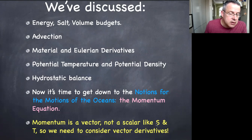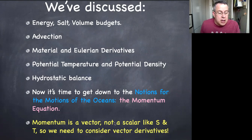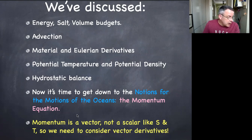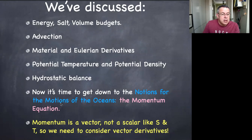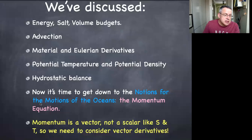Momentum is a vector, not a scalar like salinity and temperature, so we need to consider vector derivatives. This brings us to a level of mathematical complexity that's a bit higher. The equations are written out in both the Wunsch textbook and the Vallis textbook. All of the figures and equations I'm talking about are drawn from Vallis, which is a simpler presentation than Wunsch, though the versions in Wunsch are satisfactory — it just skips over many intermediate steps.